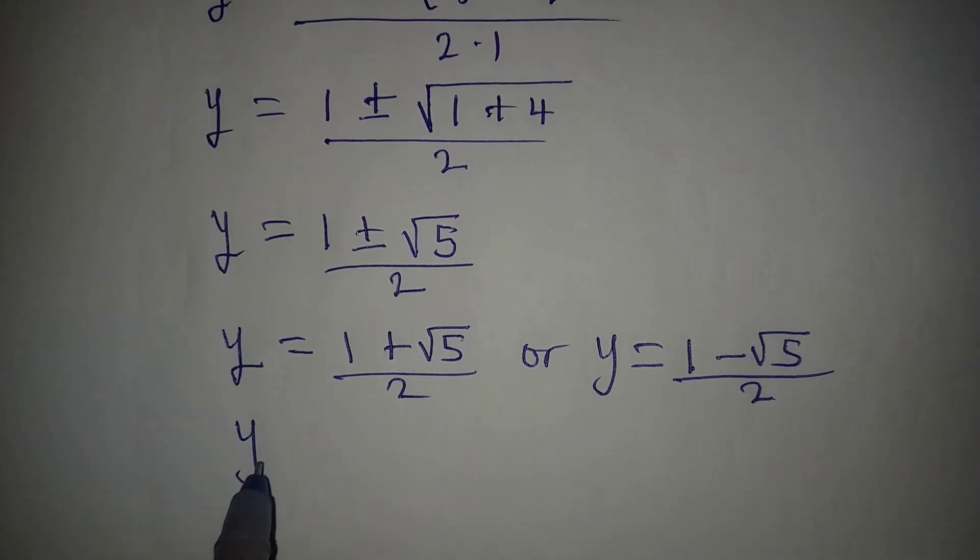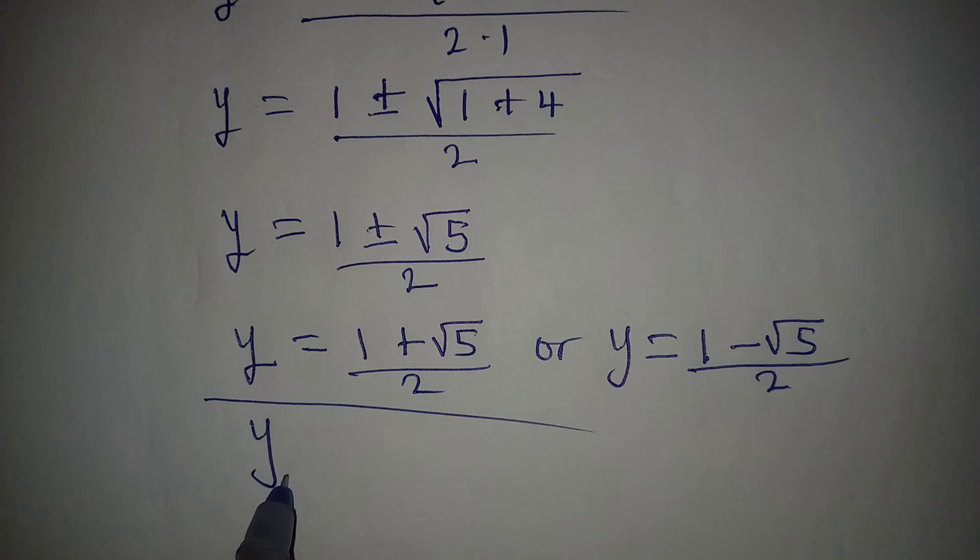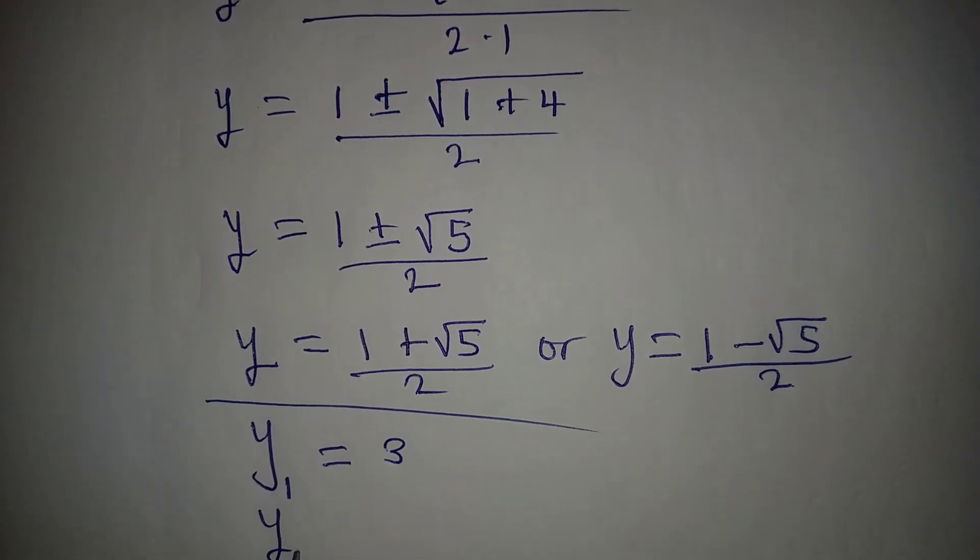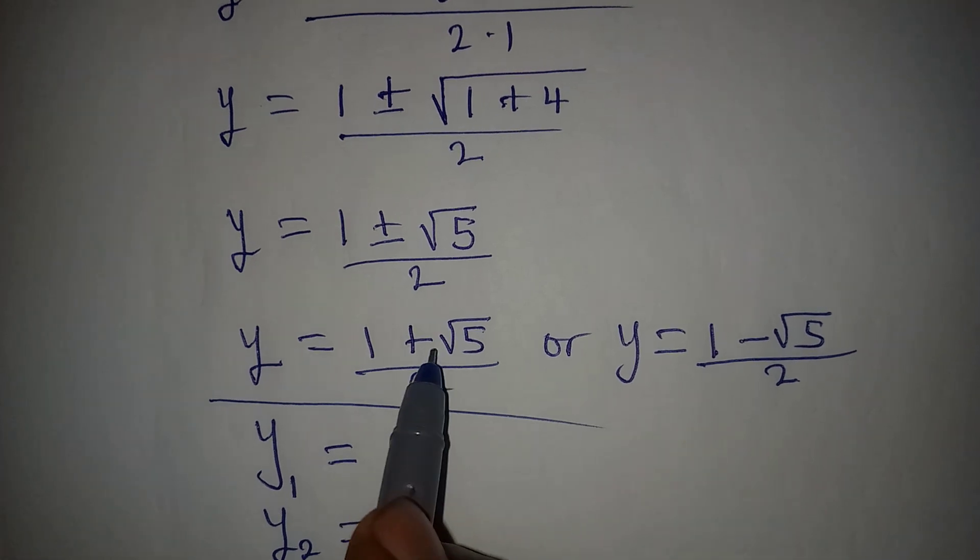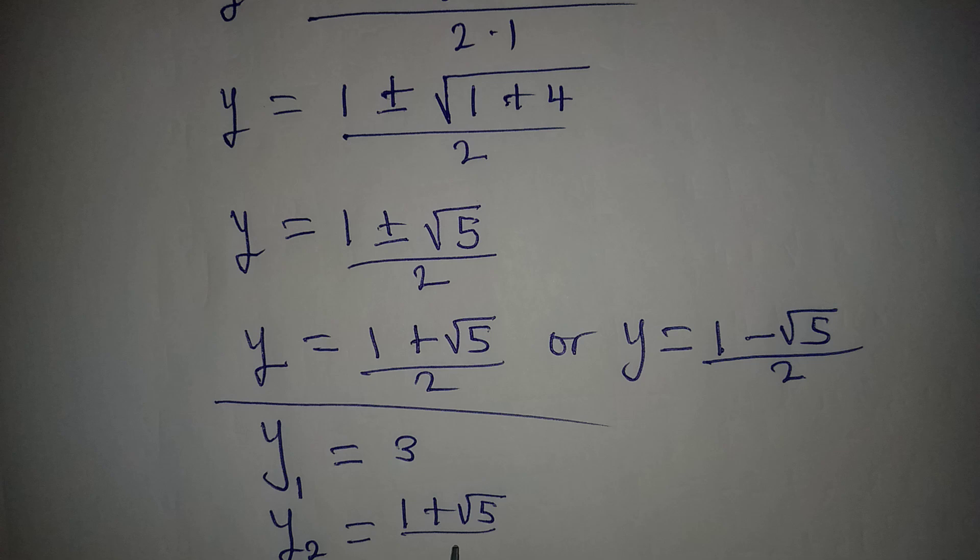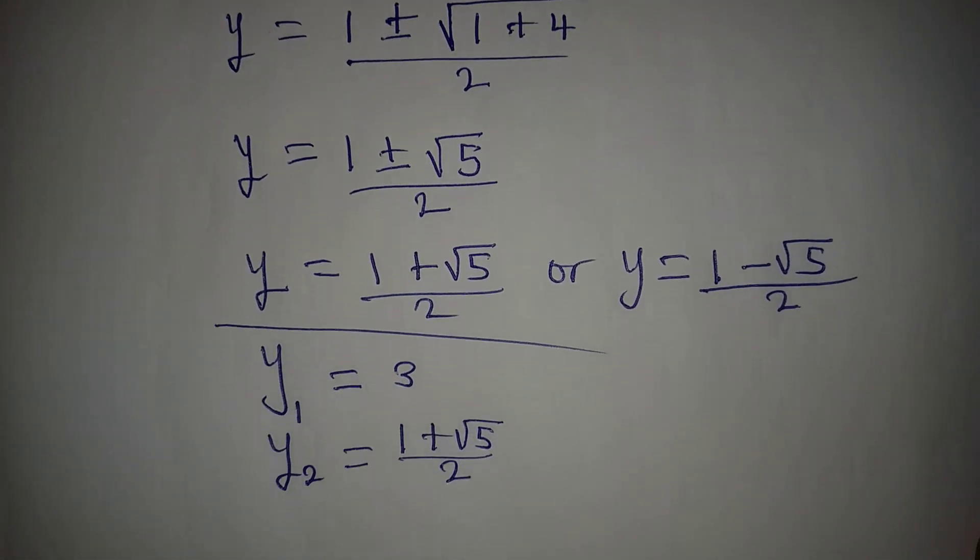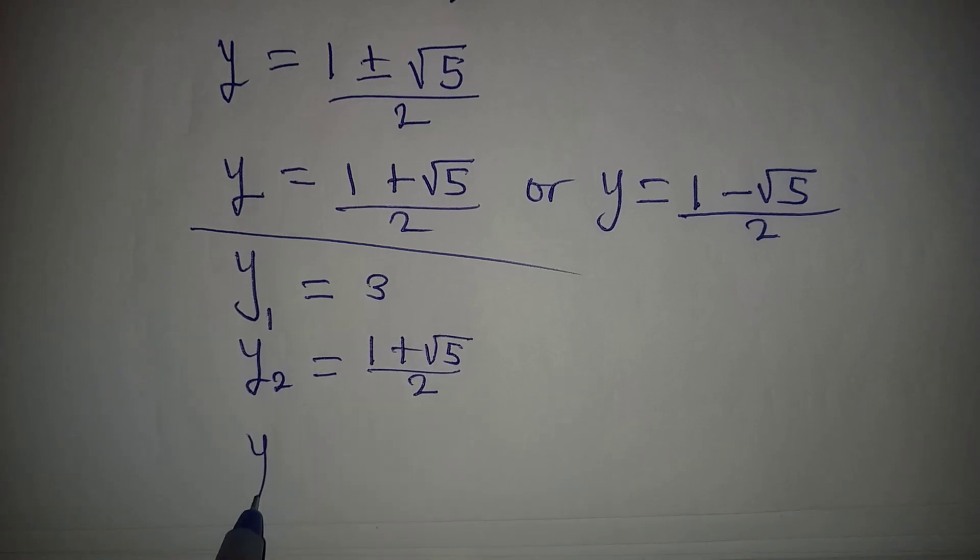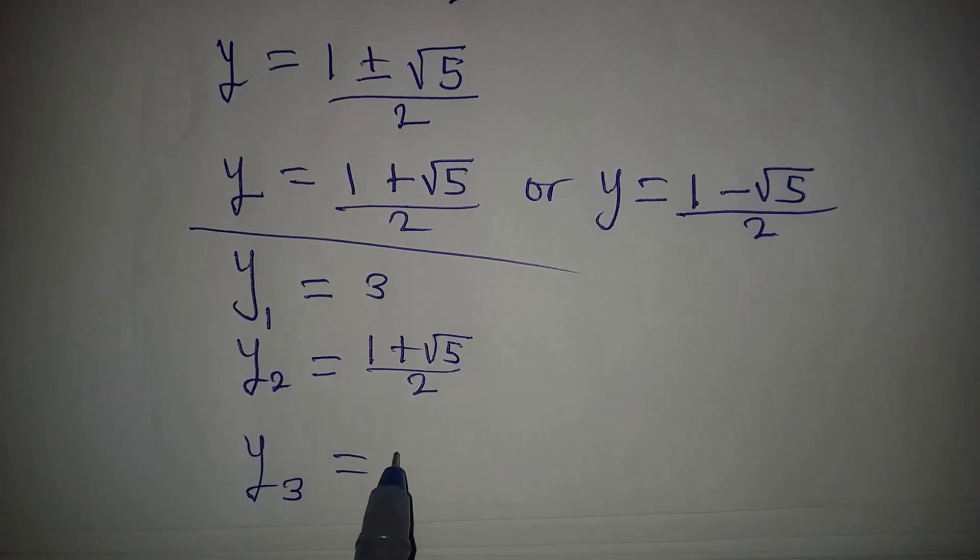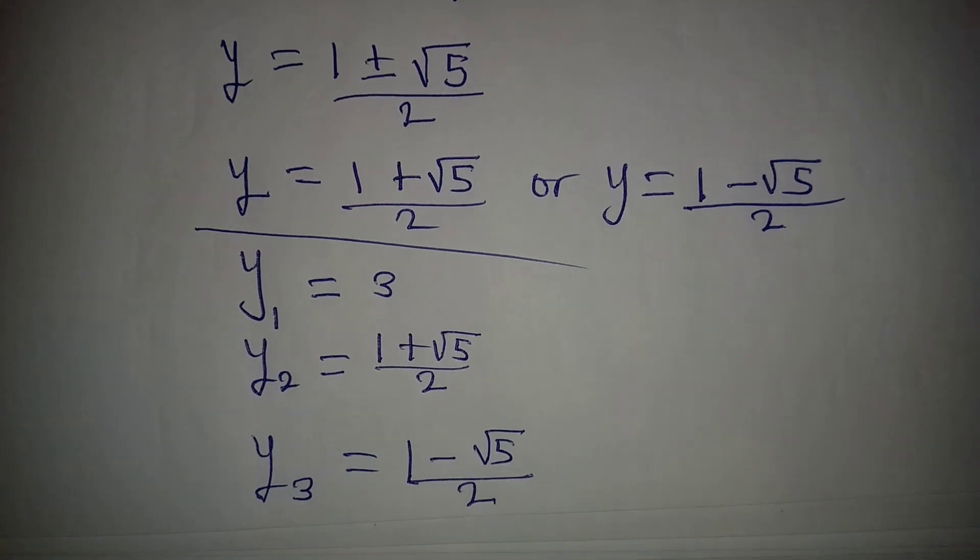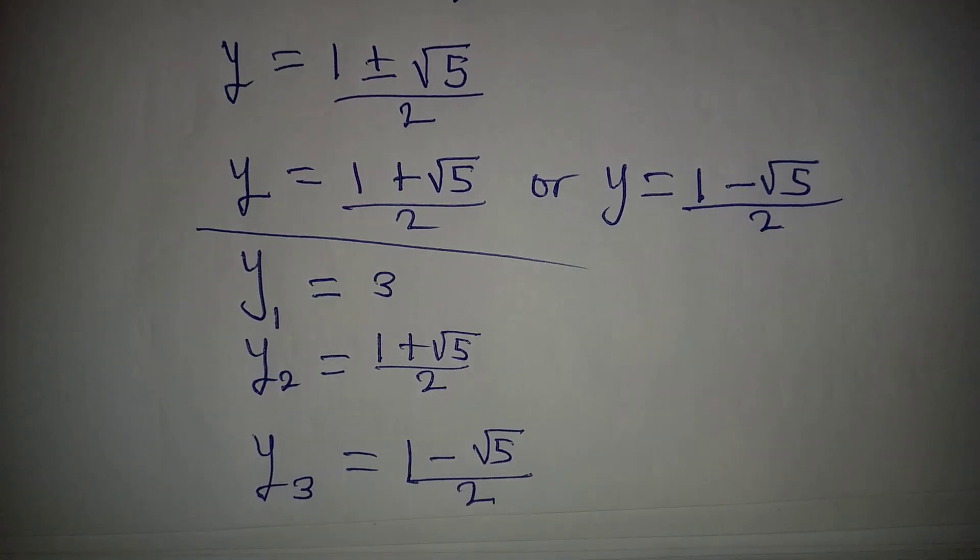Now let's pick out the three solutions. The first solution is our y1 and it's equal to 3. The second solution is our y2 which is 1 plus square root of 5 over 2. Then our third, y3, is 1 minus square root of 5 over 2. So these are the three solutions for the equation.